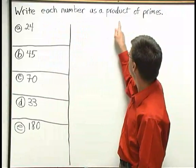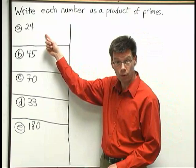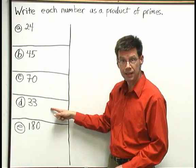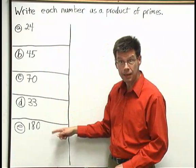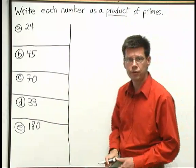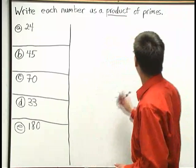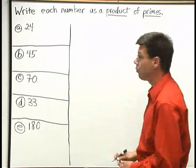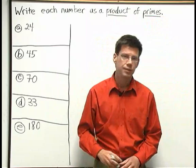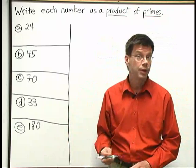Write each number as a product of primes. The numbers we're going to work with here are: a) 24, b) 45, c) 70, d) 33, and e) 180. The word 'product' refers to multiplying — we're going to break down these numbers into multiplication problems. A prime number is a whole number different from one that is only divisible by one and itself. We'll talk more about what it means to be a prime number as we go through these problems.